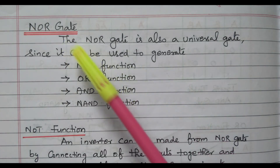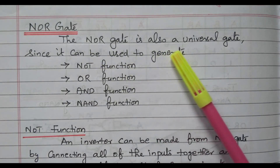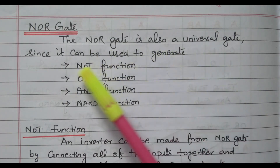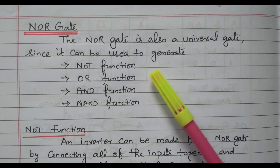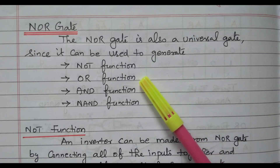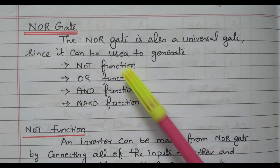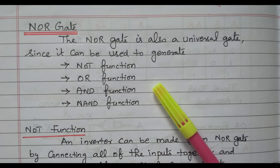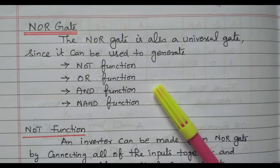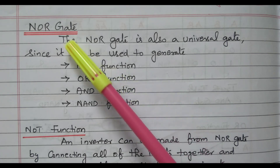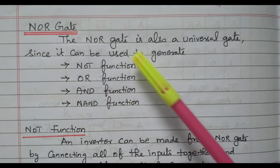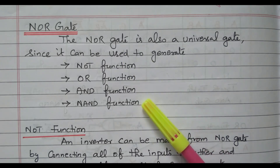The NOR gate is also a universal gate because it can be used to generate the NOT function, OR function, AND function, and NAND function. We can perform these functions using the NOR gate, so that it is called a universal gate. Both the NAND gate and NOR gate are universal gates. In this video we will see the NOR gate, and by using the NOR gate we can perform these functions.